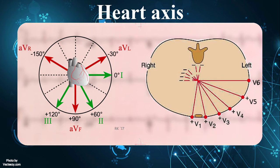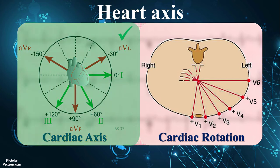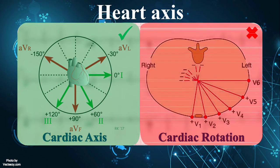The electrical position of the heart in the frontal plane is called the cardiac axis, while the electrical position in the horizontal plane is known as cardiac rotation. To determine cardiac axis, we must look only at limb leads and not precordial leads.